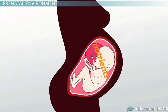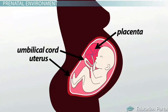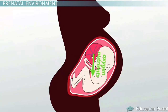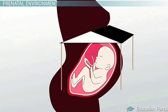Inside the uterus, the developing embryo and fetus are protected. The unborn child receives all it needs from the mother, including the nutrients that keep it healthy. The placenta is a temporary organ that joins the mother and fetus. It attaches to the mother's uterus and to the unborn child through the umbilical cord, transferring oxygen and nutrients from the mother to the fetus and allowing waste products to be eliminated.